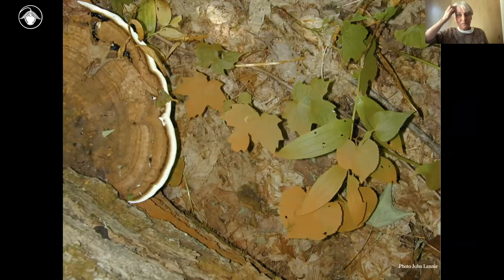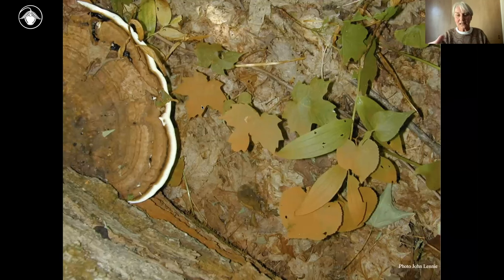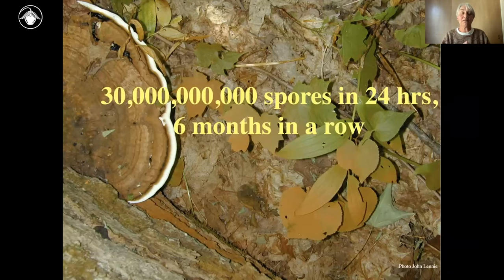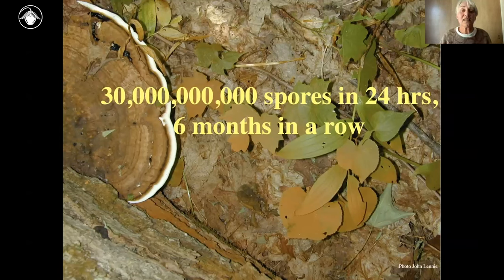Another example: here we have a Ganoderma species on the left. It forms these brown spores, as you can see. People have done the math — for a fruit body that is roughly one square foot, it will produce something like 30 billion spores in a day, and that for six months in a row. Again, gigantic amounts of spores, but a very low success rate of new offspring establishing.